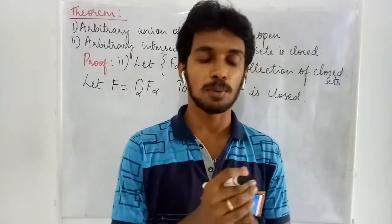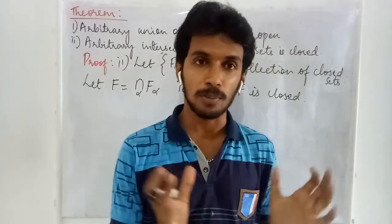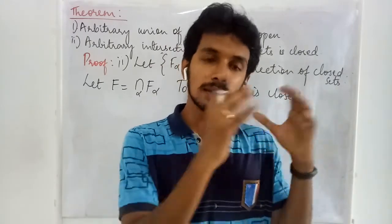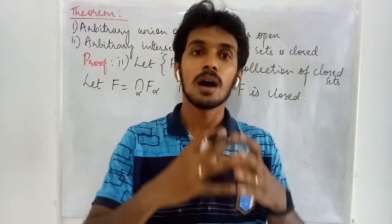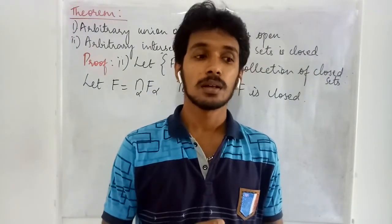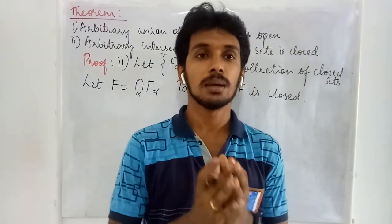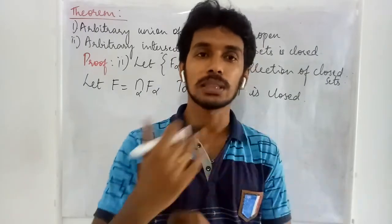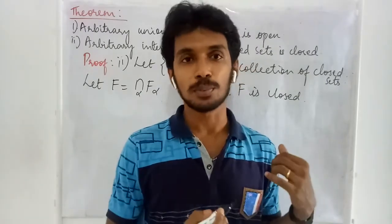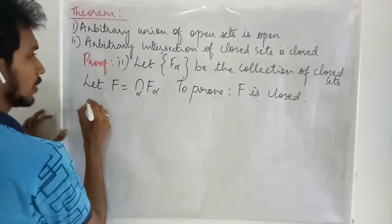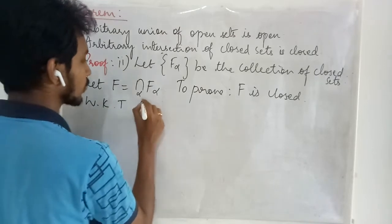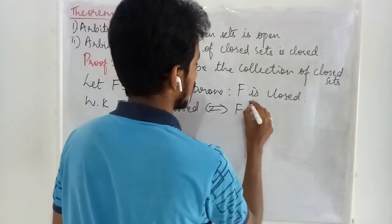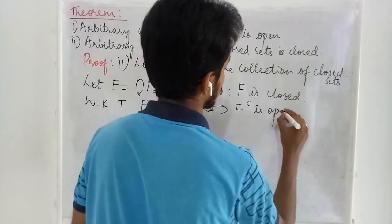We choose the complement approach because we don't know what kind of points the set is going to have. Since all the sets are given to be closed and we are making the intersection, it would be better to use the complement method. Using the previous result, we can prove this. We know that F is closed if and only if F-complement is open.